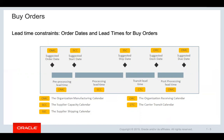The suggested dock date is calculated after subtracting post-processing lead time from the suggested due date. Post-processing lead time days are calculated using the org manufacturing calendar, while the suggested dock date is calculated based on the org receiving calendar. If the receiving calendar is not defined, the plan uses the organization manufacturing calendar.